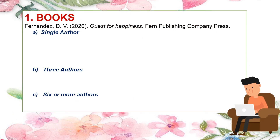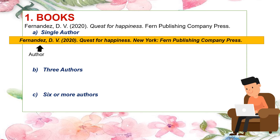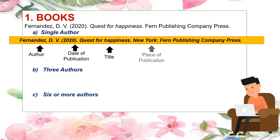For the reference citation style in books, single author: Fernandez, D.V. (2020). *Quest for Happiness*. New York: Foreign Publishing Company Press. The structure is: author's surname, first letter of the name, middle initial, followed by a period; then date of publication followed by a period; then the title of the book — the whole title is italicized and only the first letter is capitalized, except for proper names. After the title, write the place of publication and the publishing company.